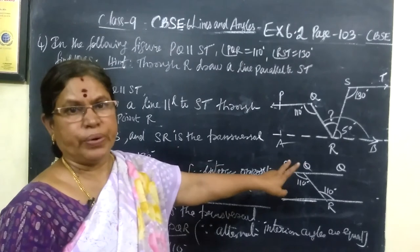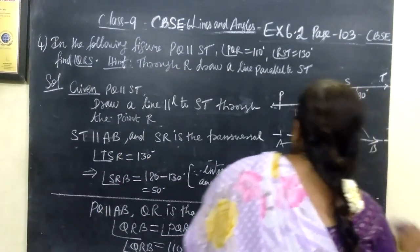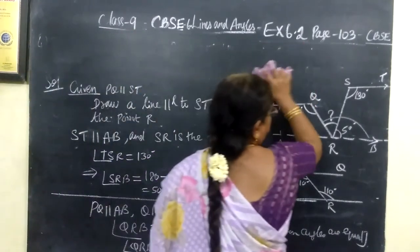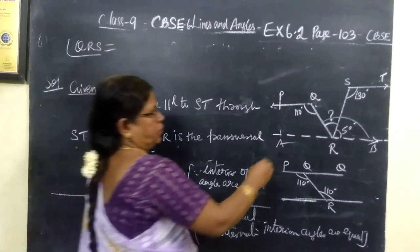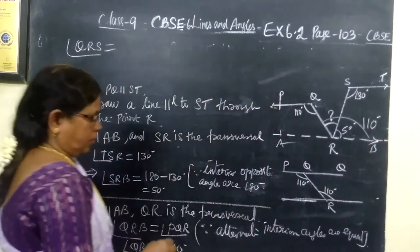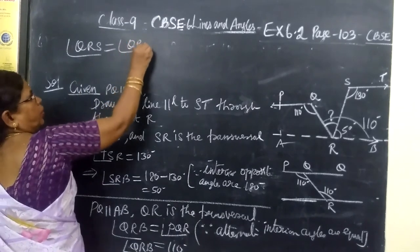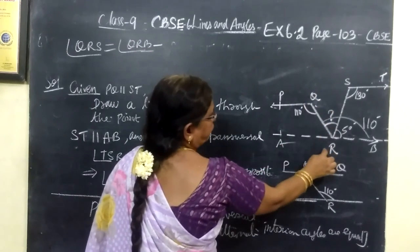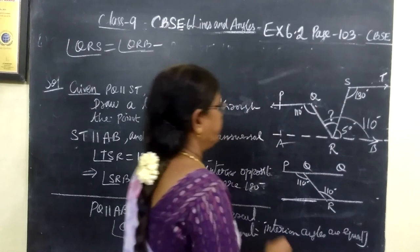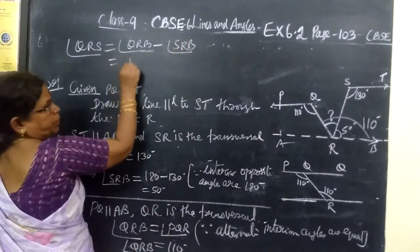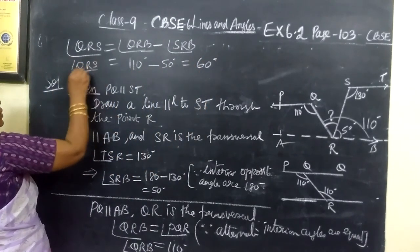The same two properties are used throughout this exercise. Now, to find QRS: angle QRS equals angle QRB minus angle SRB. QRB is 110 degrees and SRB is 50 degrees. Therefore, QRS equals 110 minus 50 equals 60 degrees.